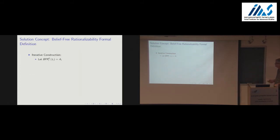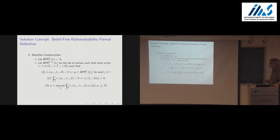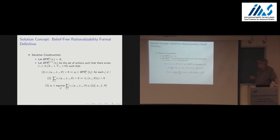Here's the formal statement. The set of belief-free rationalizable actions for player i: at round zero, all actions for him. At round k-plus-1, we want a conjecture over action profiles, type profiles, and payoff-relevant states satisfying: first, if we assign positive probability to any profile, those actions must not have been deleted at round k for any type of any other player. Second, the marginal on T-minus-i and theta under the conjecture must have the same support as the original. Action a-i must be a best response given this conjecture. It's belief-free rationalizable if it survives all rounds.